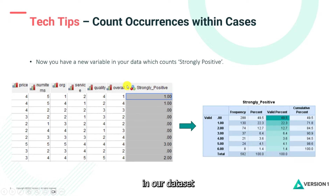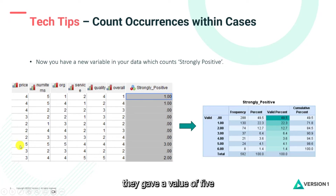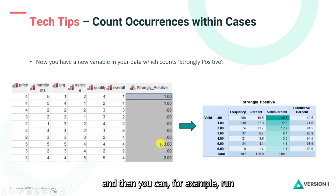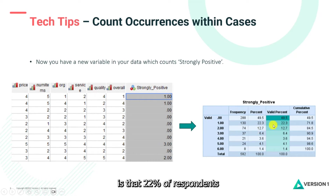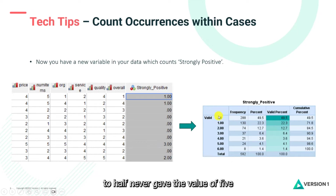We'll now have a new variable in our data set. For this respondent, they gave a value of five one time, so it has a count of one. If you look at this respondent, they gave a value of five three times. You can then run a table on 'strongly positive': 22% of respondents responded once with strongly positive, another 12% responded twice. It's interesting to note that close to half never gave the value of five for strongly positive.